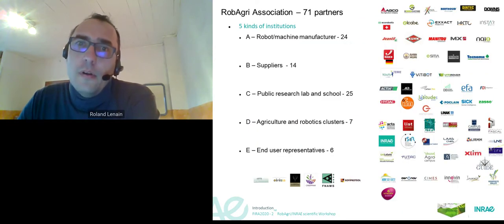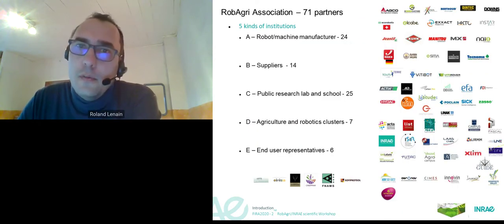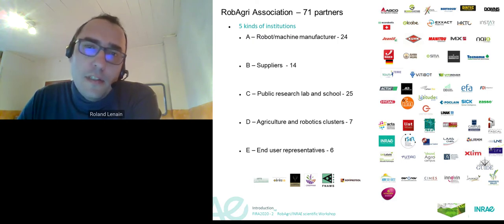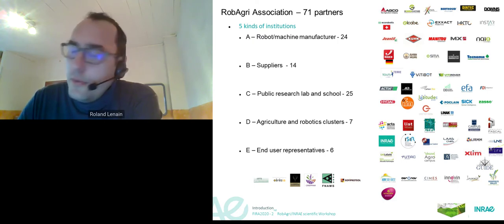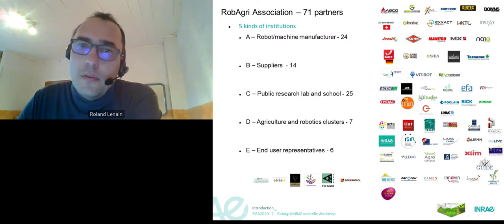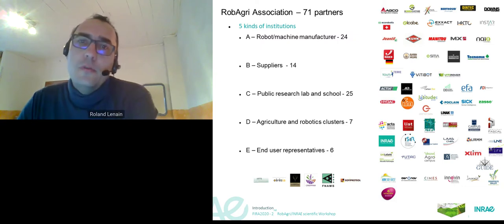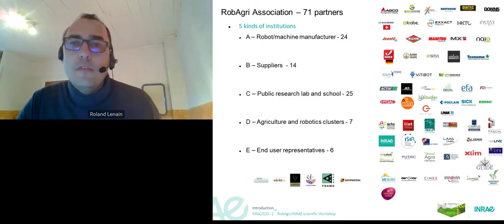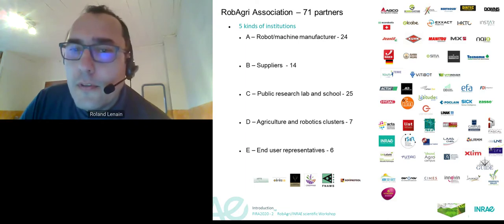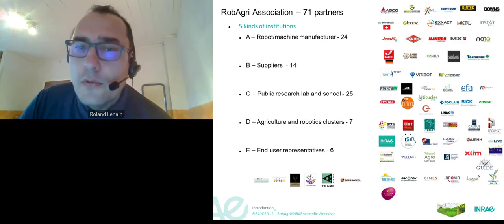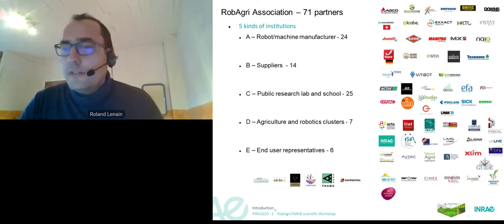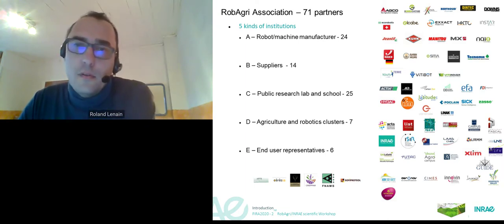We bring everybody together to make new solutions arise which are efficient for farmers, usable, and which propose a high level of standard and safety. We bring together 71 partners, classified into several groups such as manufacturers, suppliers, public research and labs, user representatives, and agriculture and robotics clusters.